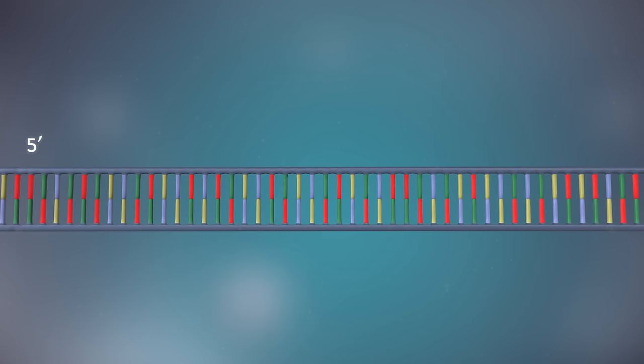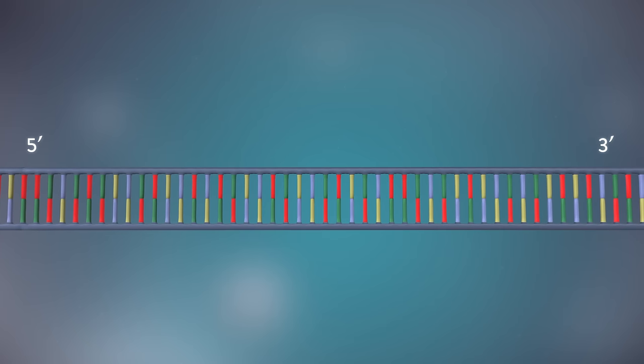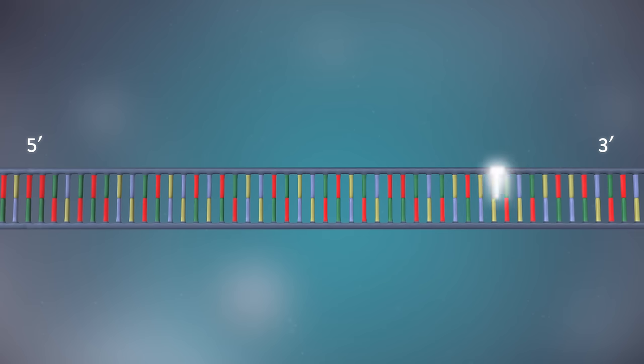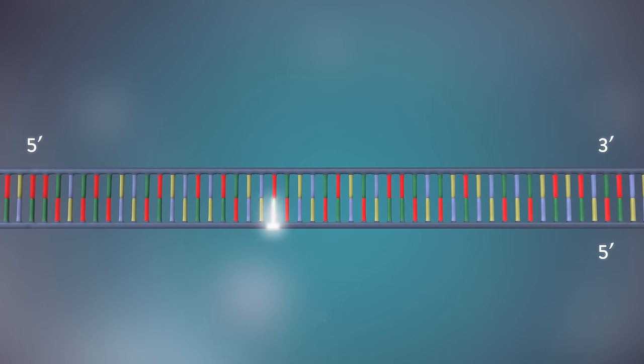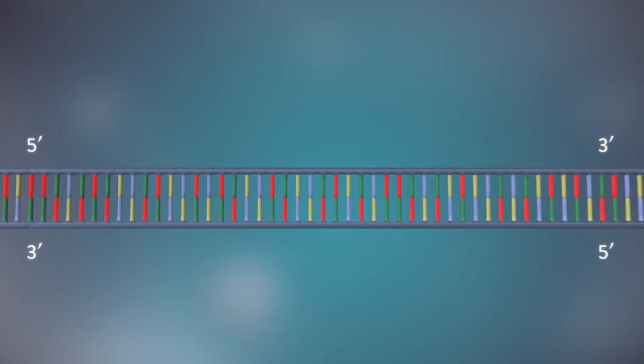Each strand has a five prime end and a three prime end. The two strands run in opposite directions. This determines how each strand of DNA is replicated.